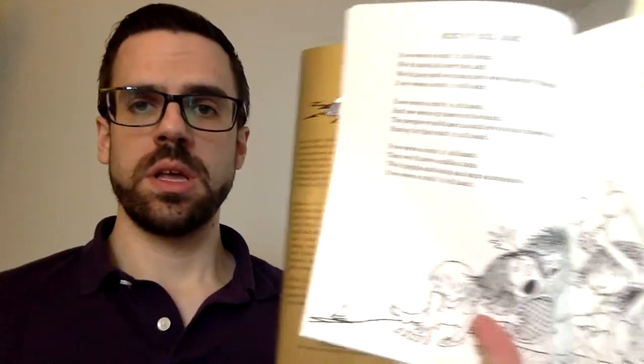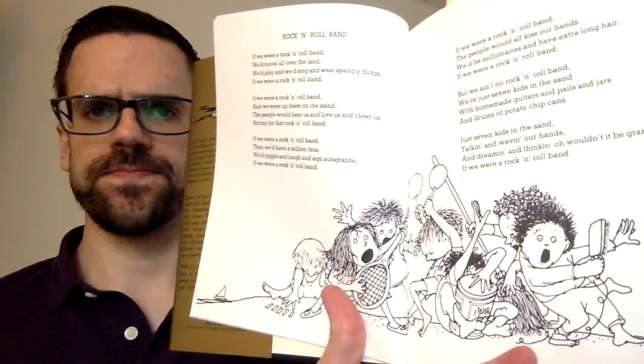First poem is Rock and Roll Band. If we were a rock and roll band, we'd travel all over the land. We'd play and we'd sing and wear spangly things. If we were a rock and roll band, if we were a rock and roll band, and we were up there on the stand, the people would hear us and love us and cheer us. Hooray for that rock and roll band.